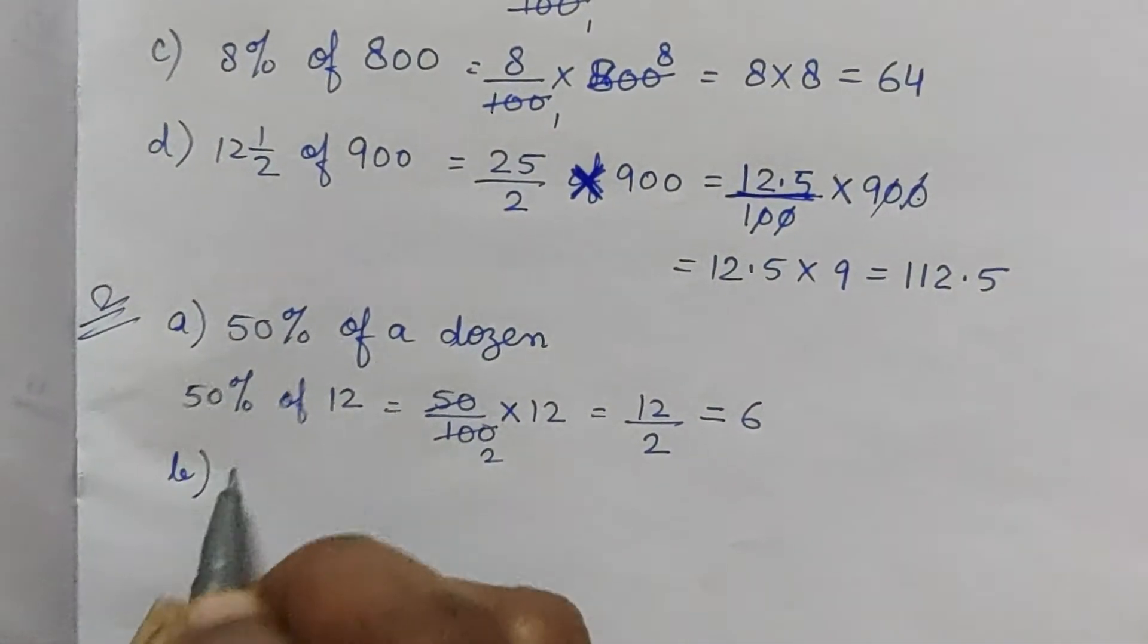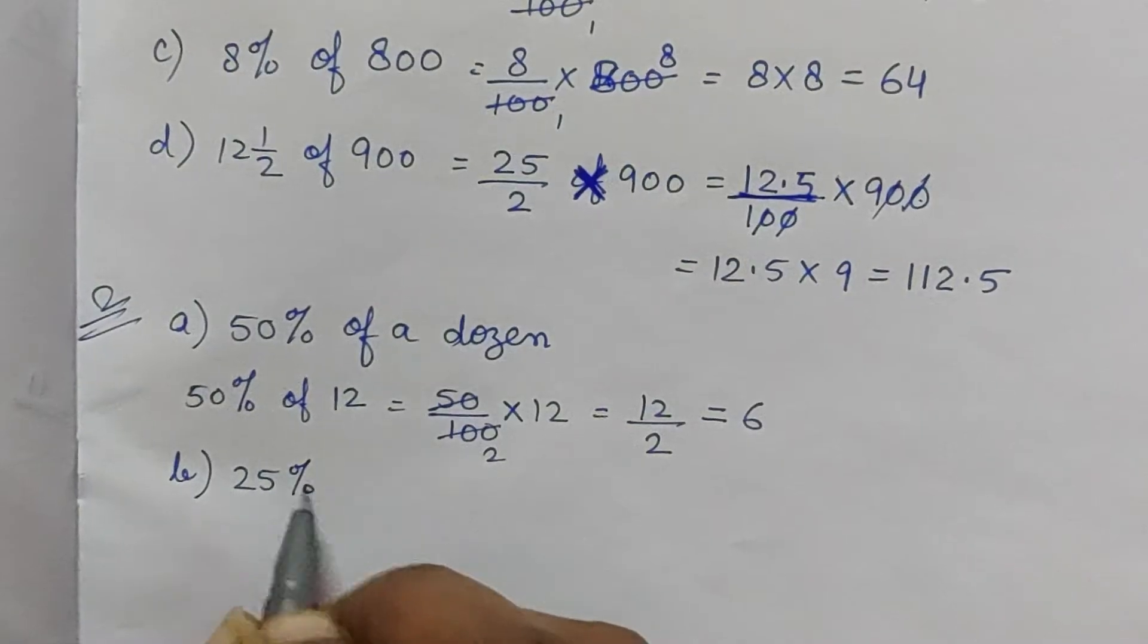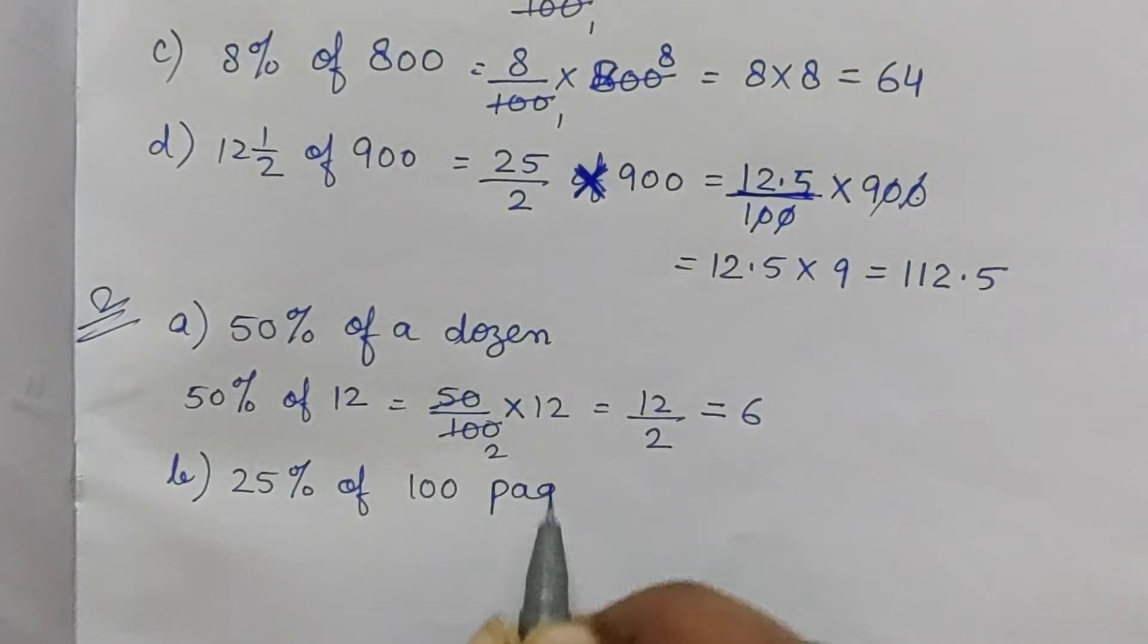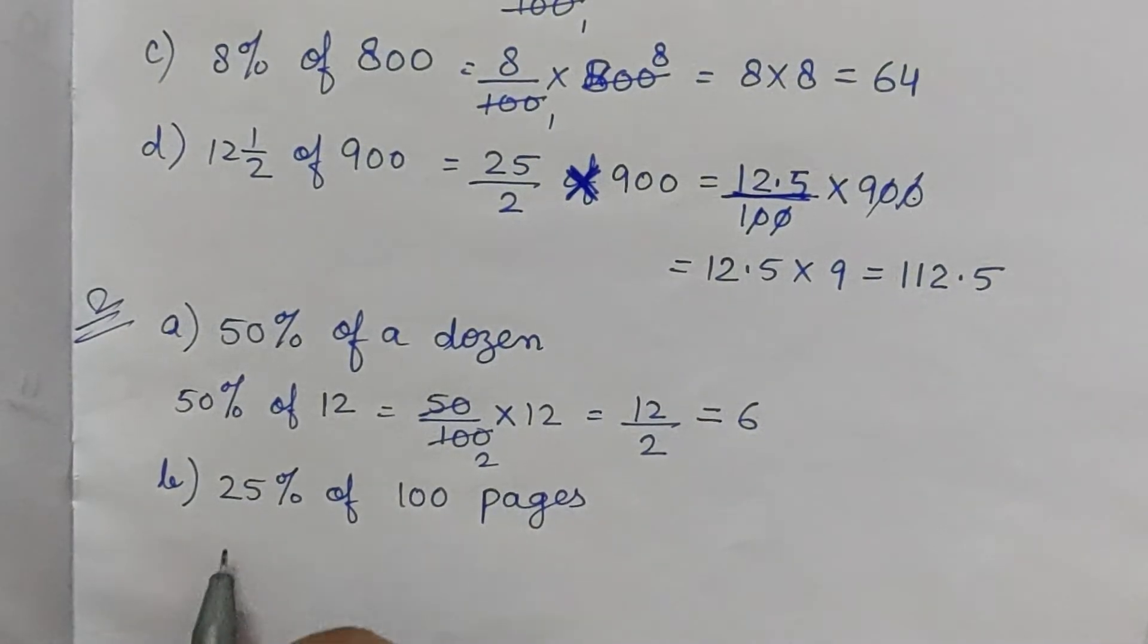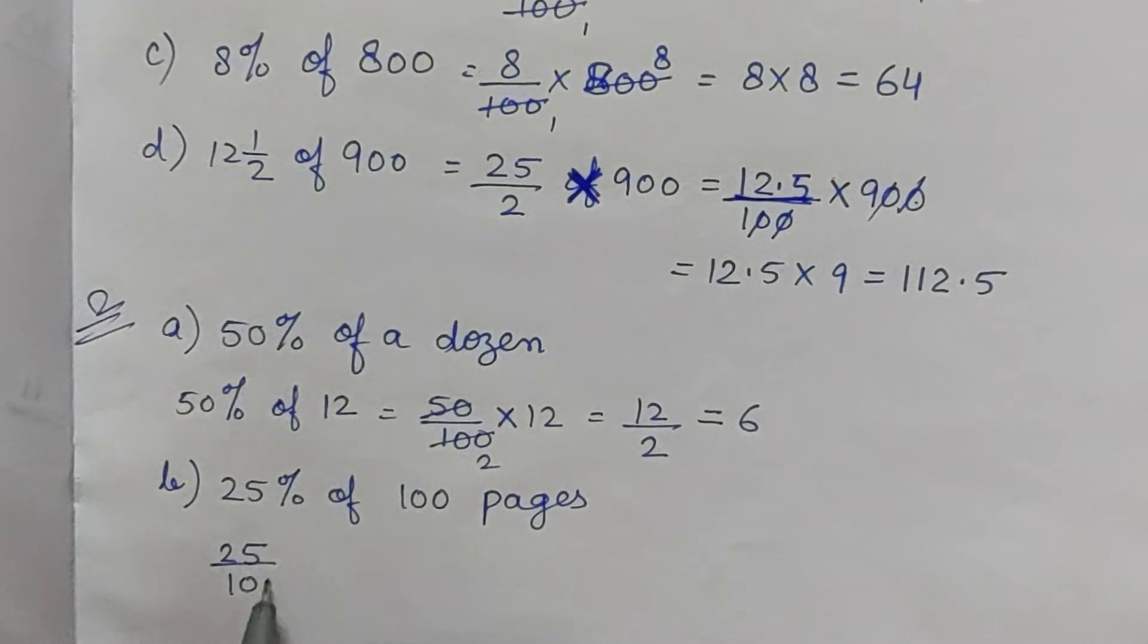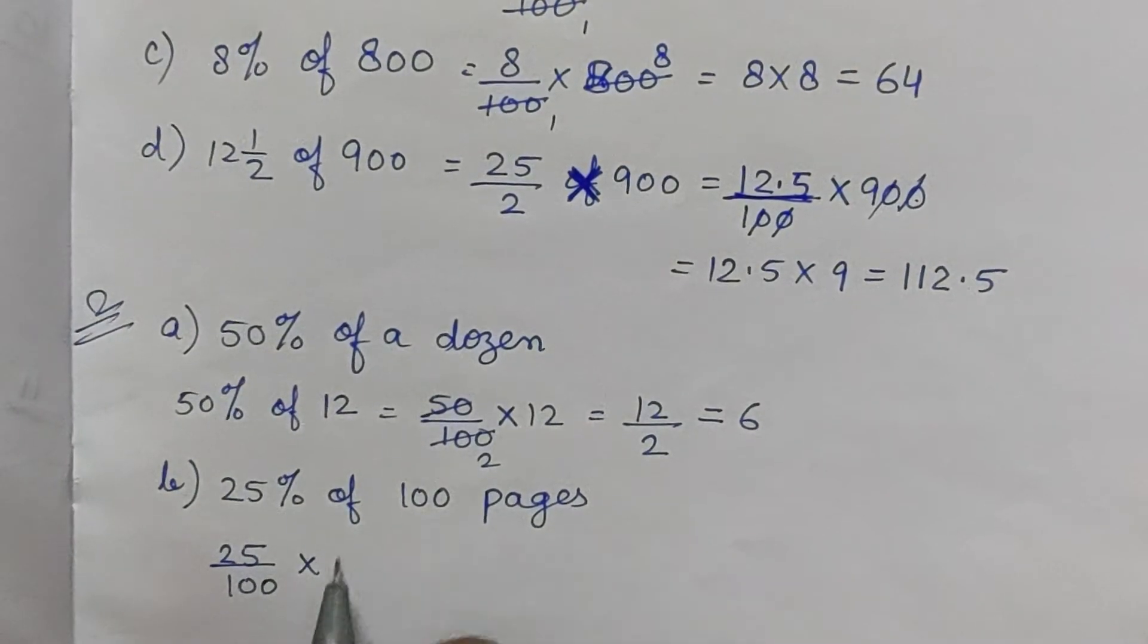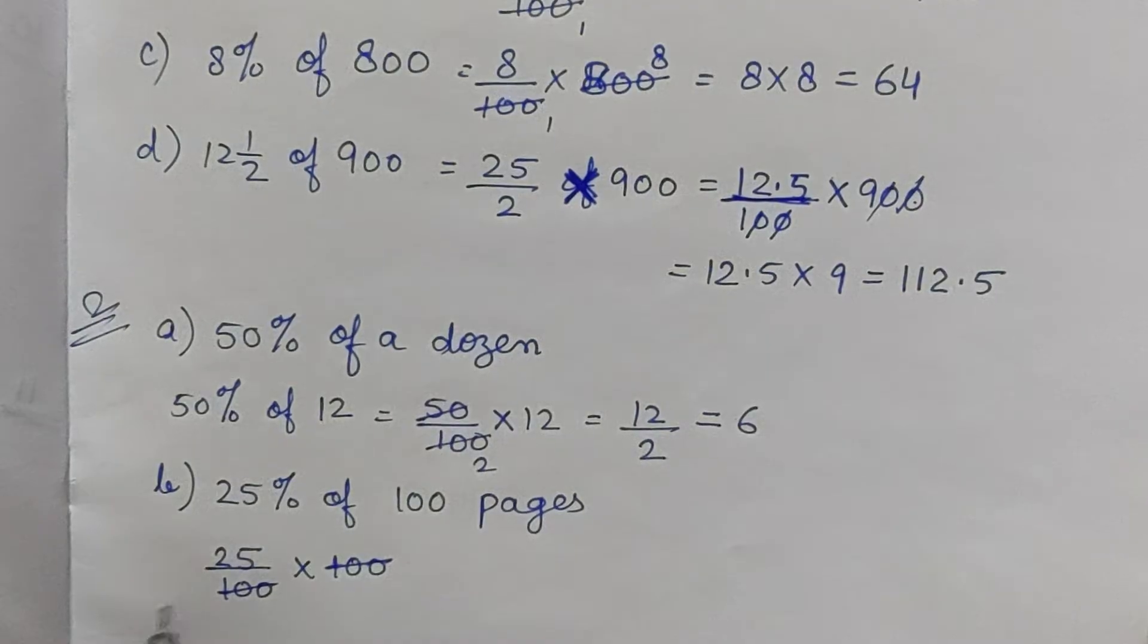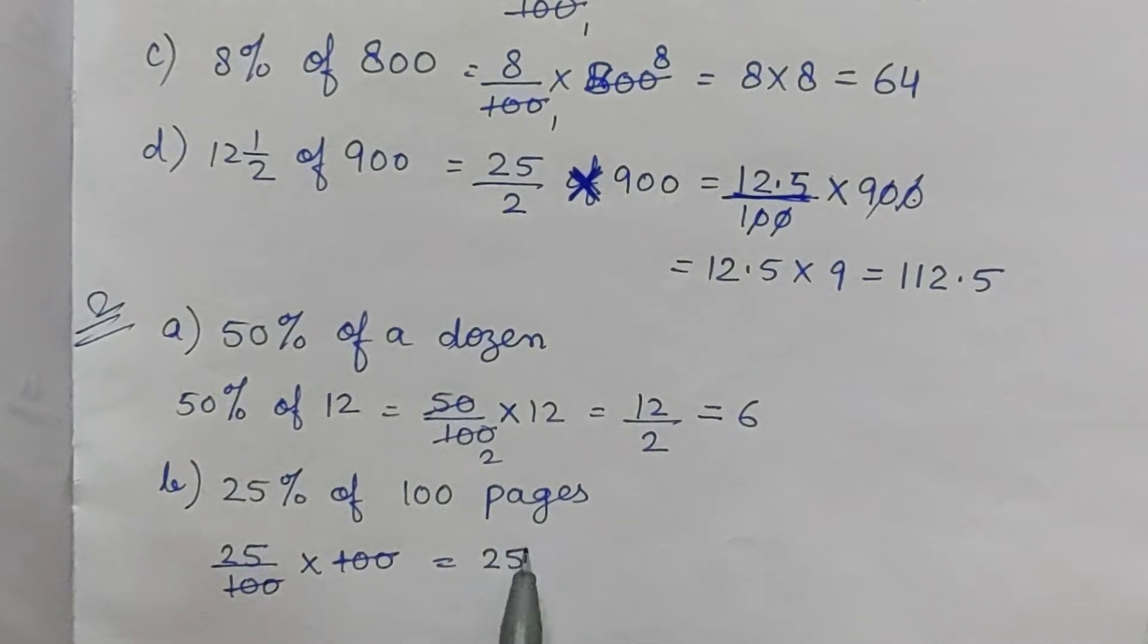Part b: 25% of 100 pages. 25% means 25 by 100 into 100 pages. 100 cancels with 100, leaving 25 pages.